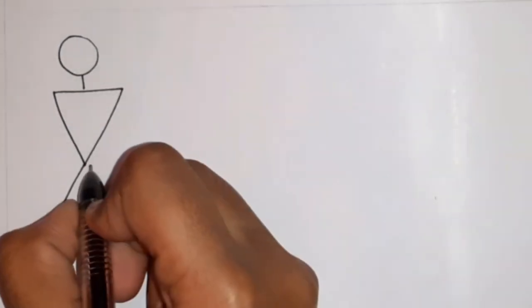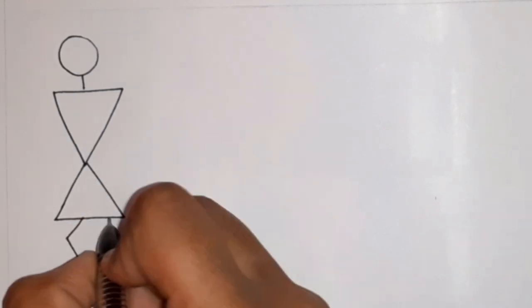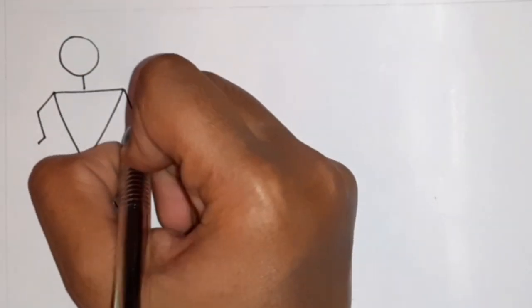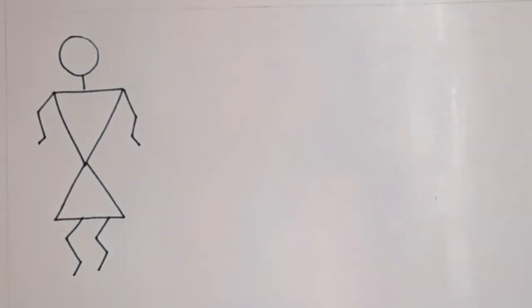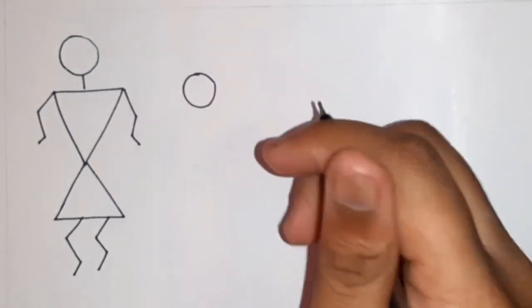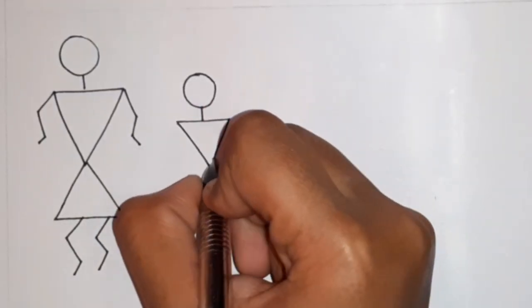Let's start with the man. For the basic human structure we draw a small circle for the head followed by a small vertical line for the leg. Then we draw an inverted triangle for the upper body and another triangle for the lower part of the body. Then we draw small crooked lines which indicate the hands and the legs.